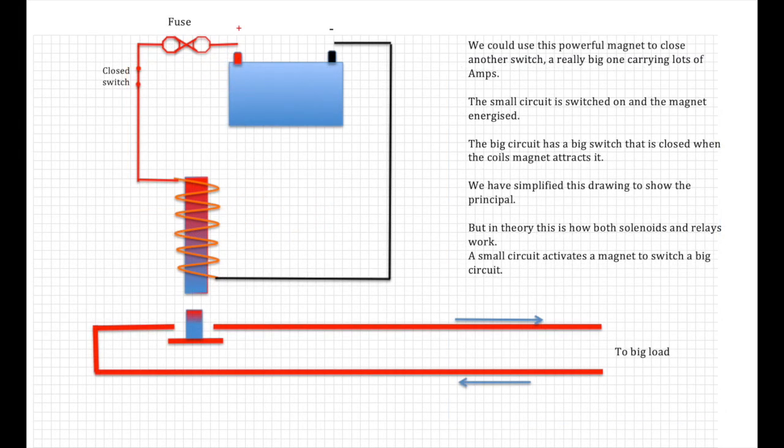This magnet can be used to move things. So in this illustration, we've turned the coil in a different direction just to make it easier to understand. We could use this powerful magnet to close another switch, a really big one, carrying lots of amps. A small circuit is switched on and the magnet is energized. The big circuit has a big switch that is closed when the coil's magnet attracts it.